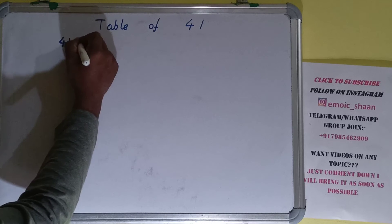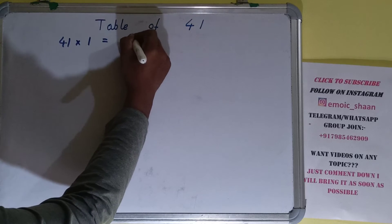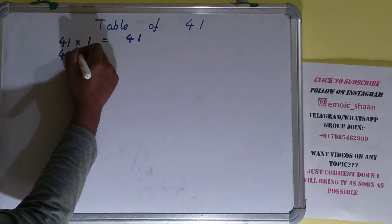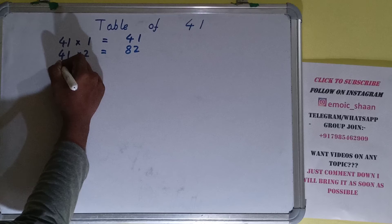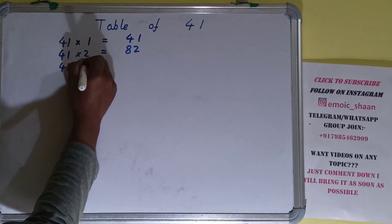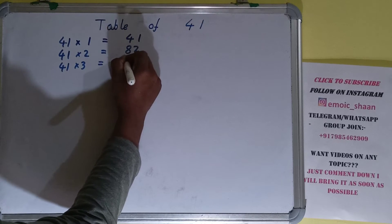41 into 1 is 41, 41 into 2 is 82, 41 into 3 is 123.